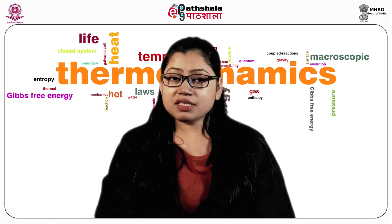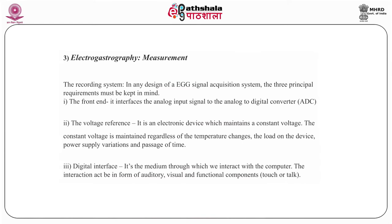Now we are going to talk about the measurements of electrogastrography — the recording system. In any design of an electrogastrography signal acquisition system, three principal requirements must be kept in mind. First is the front end, which interfaces the analog input signal to the analog-to-digital converter (ADC). The second is the voltage reference — an electronic device which maintains a constant voltage regardless of temperature changes, load on the device, power supply variations, and passage of time.